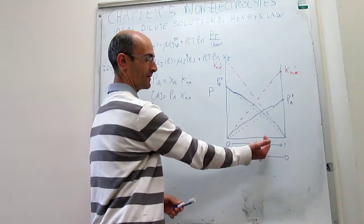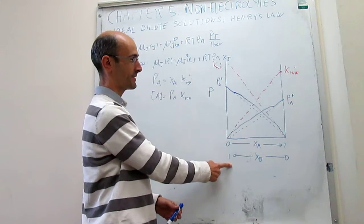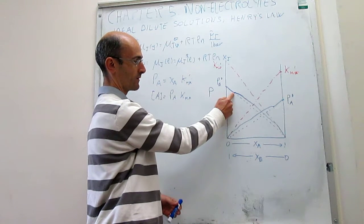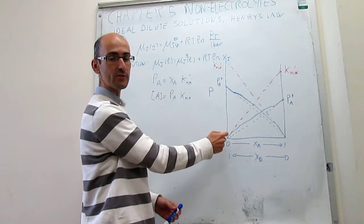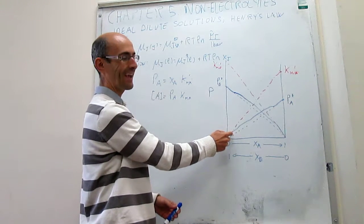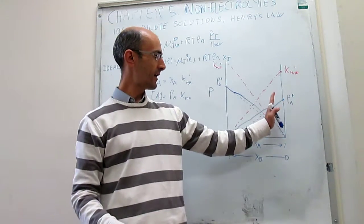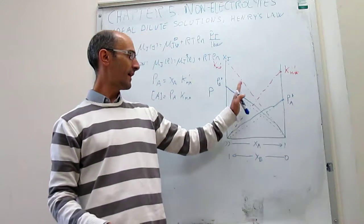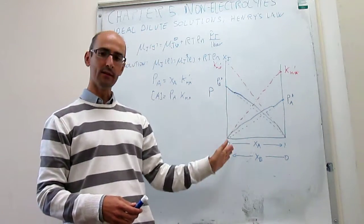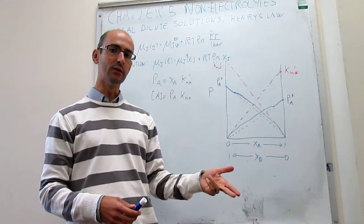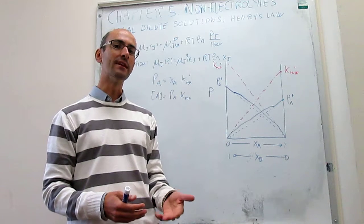The same thing happens on the other side of the diagram. When you go to high concentrations of B, now B is the solvent and follows Raoult's law, and the other component — the minority at low concentrations, the solute — follows Henry's law. So when the solvent follows Raoult's law and the solute follows Henry's law, that is called an ideal dilute solution.